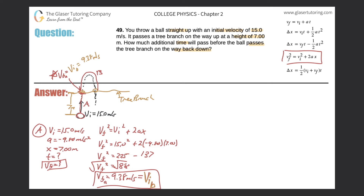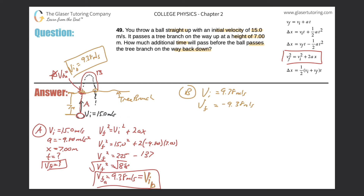Now for Part B. The initial velocity is 9.38 m/s. By symmetry — assuming no air resistance — whatever velocity the ball had passing the branch going up, it has the same magnitude going down, just opposite sign. So the final velocity is −9.38 m/s. Displacement is unknown, time is unknown, and acceleration is −9.80 m/s².